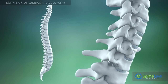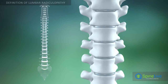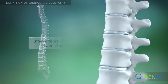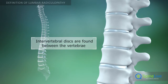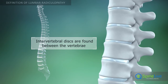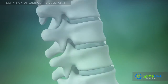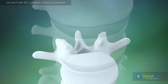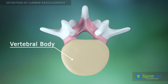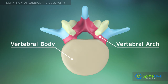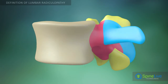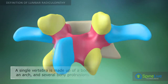The spine is made up of 33 individual bones called vertebrae. These are separated by intervertebral discs. A typical lumbar vertebra consists of a body and a vertebral arch, which has several processes for articular and muscular attachments.